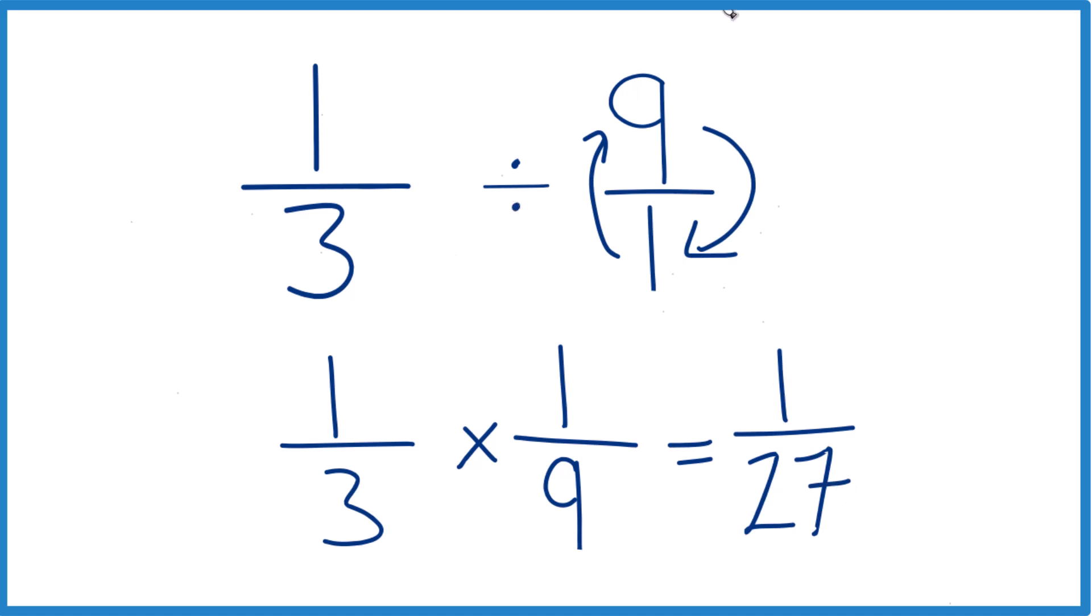So one-third divided by nine is one-twenty-seventh. One-third times nine, that's also one-twenty-seventh there. Kind of makes sense, because we have one-third, which is a fraction. It's less than one, trying to figure out how many times this whole number nine fits into it. It should be less than one, and it should be a lot less than one-third, which it is.